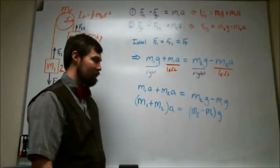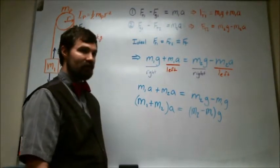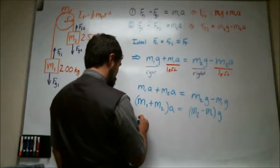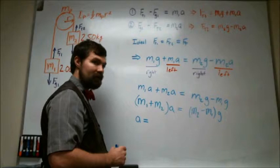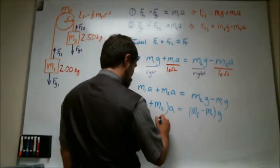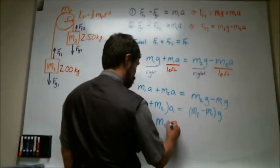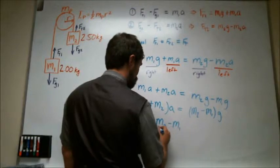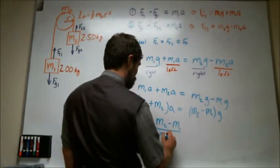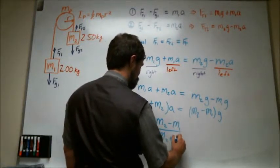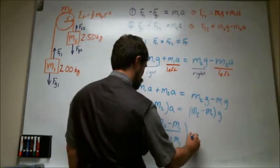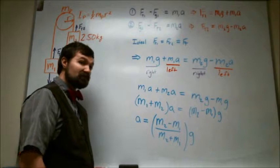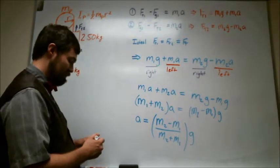So now we want to solve for this acceleration. And what we do is just divide both sides by the sum of the masses. So it's basically the difference between the two masses divided by the sum of the two masses times g. And so there we have it.